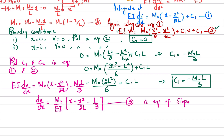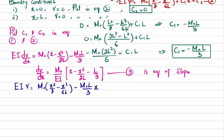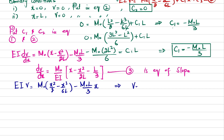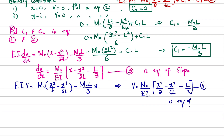Substituting C1 and C2 into equation 2: EI times v equals M0 times (x²/2 minus x³/6L) plus (minus M0·L/3) times x. So v equals (M0/EI) times (x²/2 minus x³/6L minus Lx/3). This is equation 4, the equation of deflection.